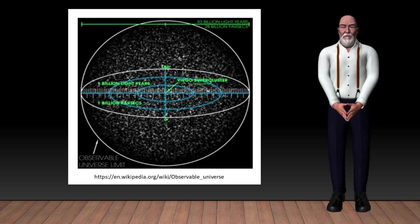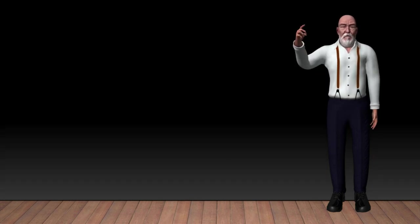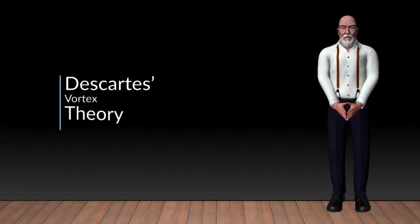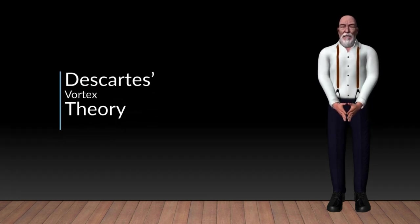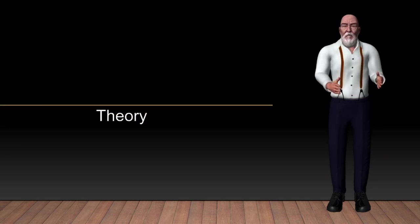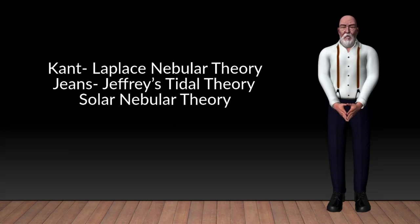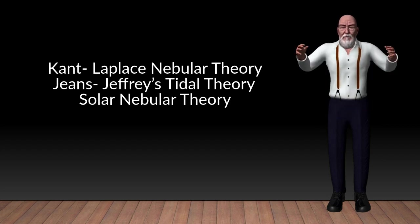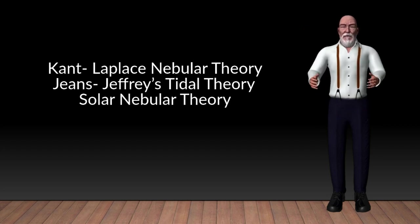Here are the theories explaining the origin of the solar system: number one, the Descartes Vortex Theory; number two, Buffon's Collision Theory; three, the Kant-Laplace Nebular Theory; four, the Genes-Jeffries Tidal Theory; and lastly, the Solar Nebular Theory.